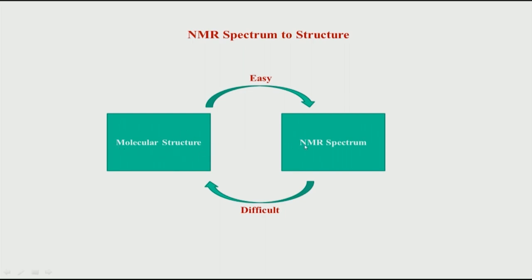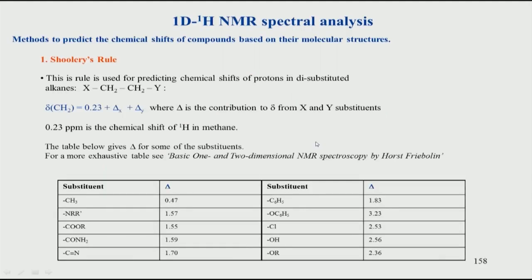Given a structure, can I predict the chemical shift value of a proton? We are now going from structure to spectrum; later we will go the other way. One of the very first basic rules is Schultz's rule, applicable to alkane molecules of this type of structure. You have two vicinal CH2 groups attached to two different functional groups X and Y. Because X is not the same as Y, these two hydrogens are not chemically equivalent — they are different from the other pair. But if X and Y are the same, there is symmetry and the two CH2 groups become equivalent.